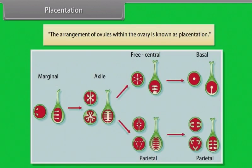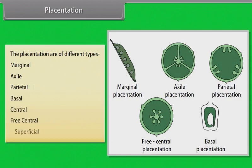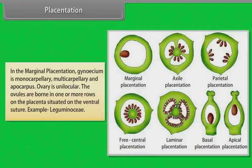Placentation: The arrangement of ovules within the ovary is known as placentation. Types include marginal, axile, parietal, basal, free central, and superficial. In marginal placentation, gynoecium is monocarpellary and apocarpous, ovary is unilocular, and ovules are born in one or more rows on the placenta situated on the ventral suture. Example: Leguminosae.